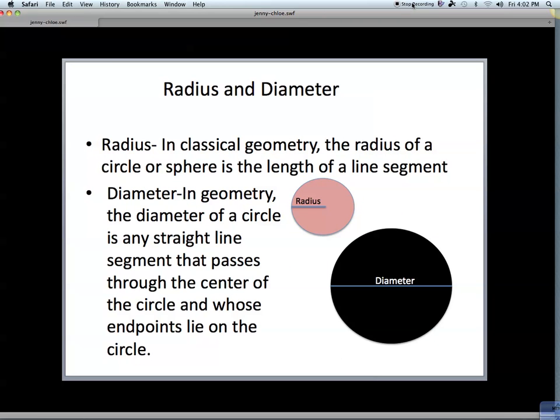Radius: In classical geometry, the radius of a circle or sphere is the length of a line segment. Diameter: In geometry, the diameter of a circle is any straight line segment that passes through the center of the circle and whose endpoints lie on the circle.